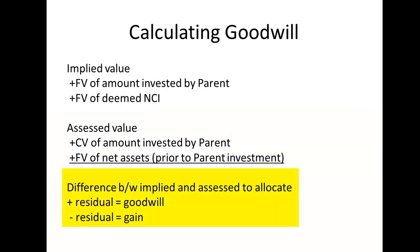When the implied value is less than the value of the consideration received, we have negative goodwill, which gets recorded as a gain. When the implied value is greater than the value of the consideration received, we have goodwill. The fair value increments will be amortized in the same way as we have previously learned.